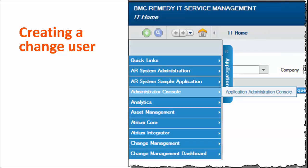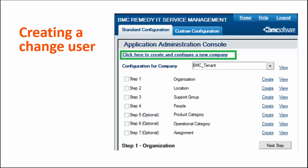The first step in the process is to create a change user for a support company that will later be used in change template configuration. First, log on to the corporate ITSM server or the BMC Remedy On Demand server as the AR administrator user — for example, demo — and open the application administration console. Under the Standard Configuration tab, click this button and create an organization, location, and site.